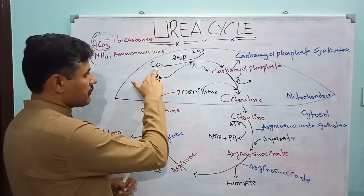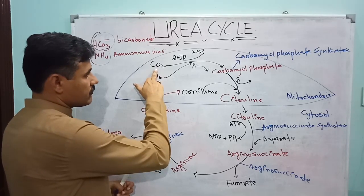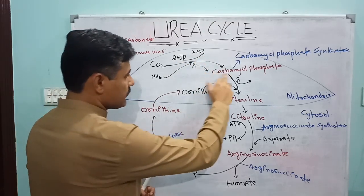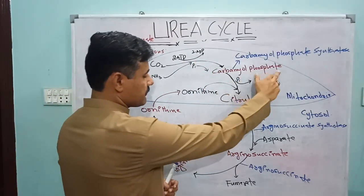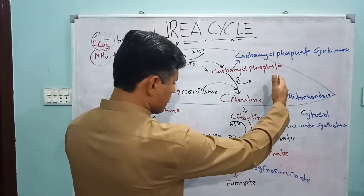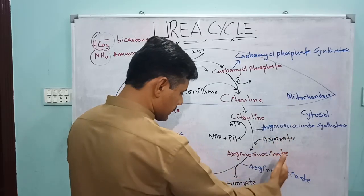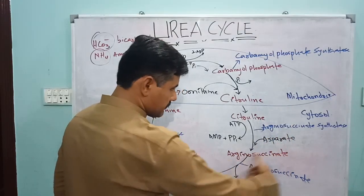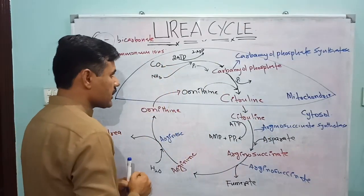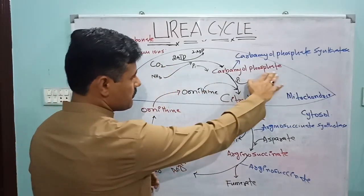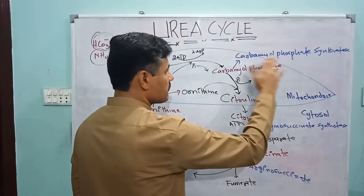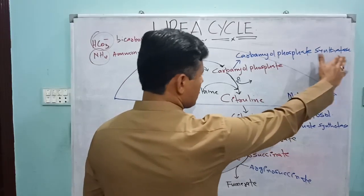Ammonia reacts with carbon dioxide with the consumption of two molecules of ATP, synthesizing a molecule of carbamyl phosphate. The first step of the urea cycle takes place in the mitochondria. Here, carbon dioxide reacts with ammonia to synthesize carbamyl phosphate, with the help of the enzyme carbamyl phosphate synthetase.